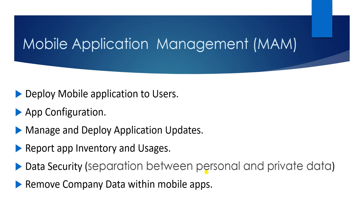Then there is data security — the separation between personal and company data. MAM can separate your company data and your personal data. When you enroll any device using the data security feature, data will be separated between your company data and your personal data. You cannot merge both. For example, if you are using company email on your phone and you download a company PDF or file, you cannot copy it as personal data or send it to your personal Gmail.